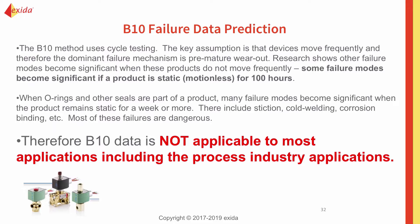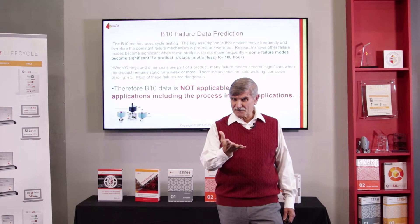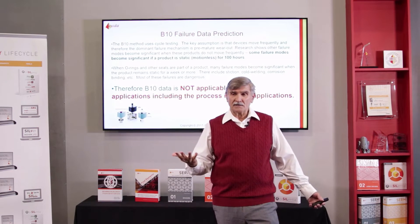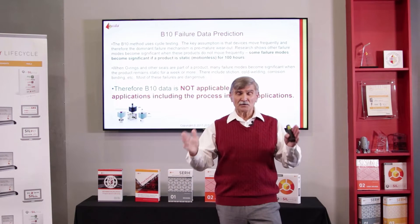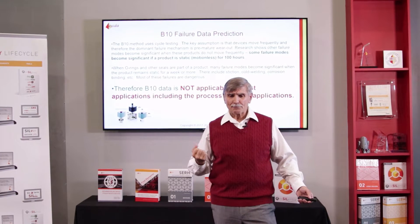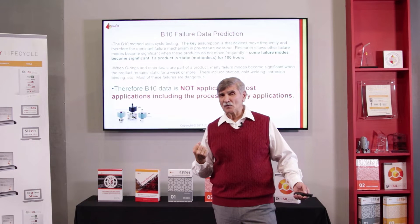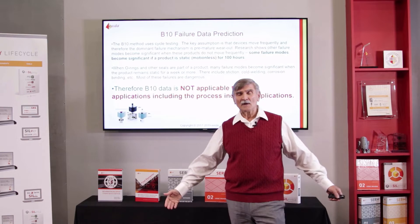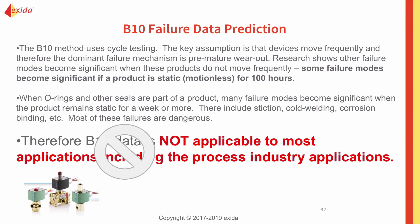B10 is based on cycle testing. It's primarily therefore for mechanical or electromechanical components and has basically no relevance to most electronics. The problem is the unstated assumption that parts fail because of premature wear-out. A cycle test is a wear-out test, and the failures during useful life are only due to premature wear-out. That means the product has to be constantly moving. Our analysis indicates if a part doesn't move for 10 hours, all bets are off — the assumption is no longer valid. Therefore, the B10 method is just not applicable to most applications, especially in the process industries. Don't use B10 data.